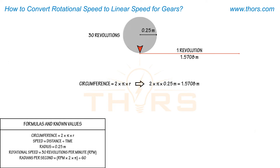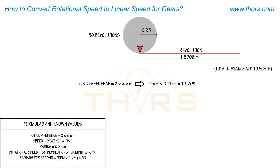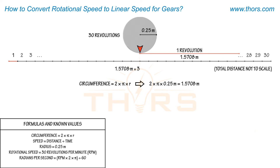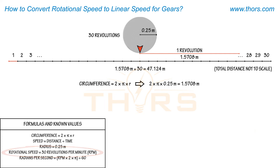In this example, the drum rotates at 30 revolutions per minute. The distance traveled for 30 revolutions of the drum is 1.5708 meters multiplied by 30, which equals 47.124 meters. The drum completes 30 revolutions in one minute.